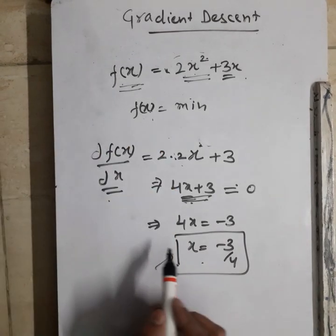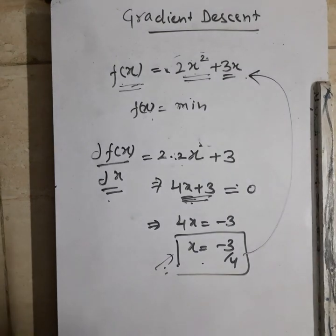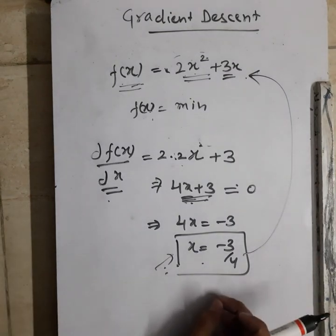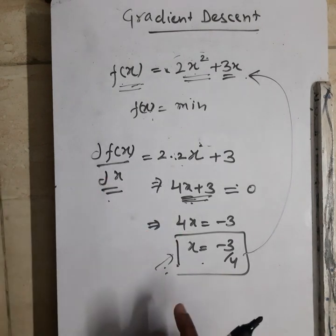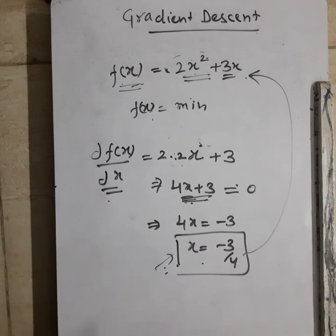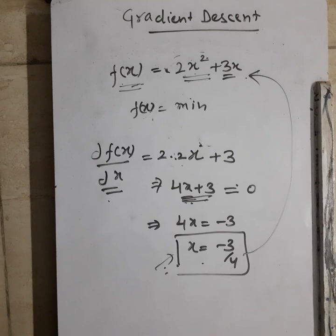For those who are not very comfortable with derivatives, you can check any math-related website on how derivatives work. We generally study these in 11th or 12th grade. I don't want to derail from the gradient descent topic, so I won't go into the depth of derivatives. Those who want to learn about derivatives, please first study them — then you'll be able to relate very well here.